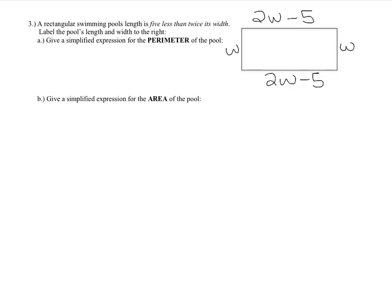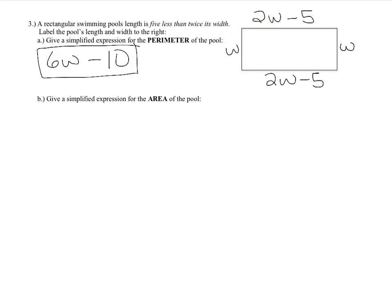For the perimeter of the pool, add up all four sides. Looking at the w terms: w plus w is 2w, plus two sides of 2w minus 5 adds 4w minus 10. Total: 6w minus 10. Alternatively, you could use 2 times the length plus 2 times the width and combine like terms.